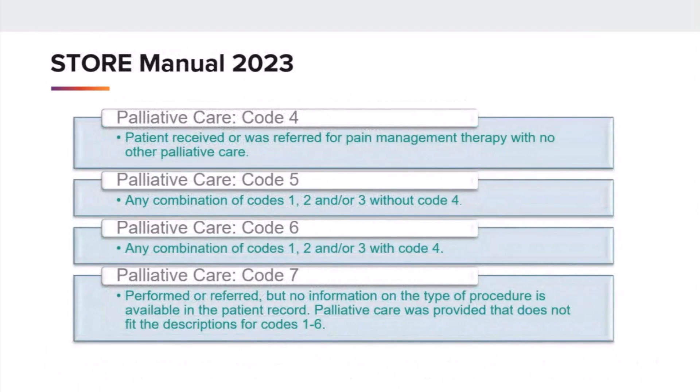The STOR manual has palliative care data item descriptions. Code 1 is surgery. Code 2 is radiation. Code 3 is chemo, hormone, or other systemic drugs. And they are all assigned with these codes in the palliative care data item to relieve and alleviate symptoms.